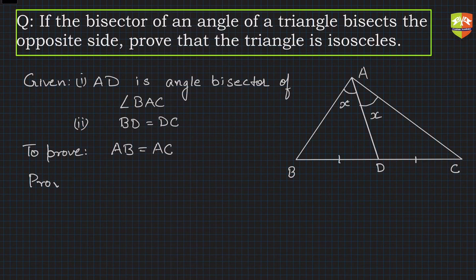So the moment there is an angle bisector, what do we get as a hint? We get a hint that internal angle bisector could be used over here. So if that is true, that means in triangle ABC, what can you say?